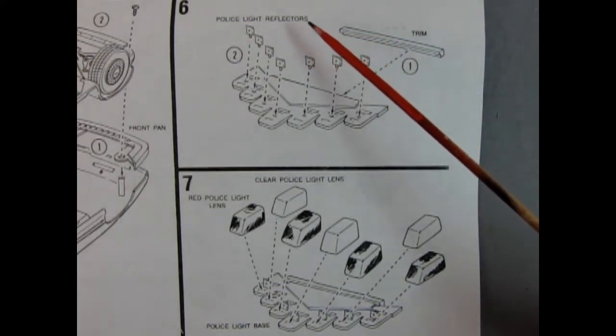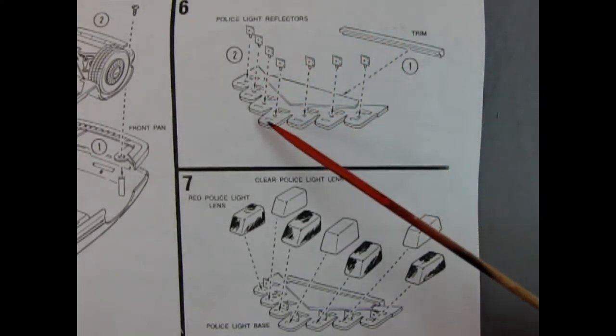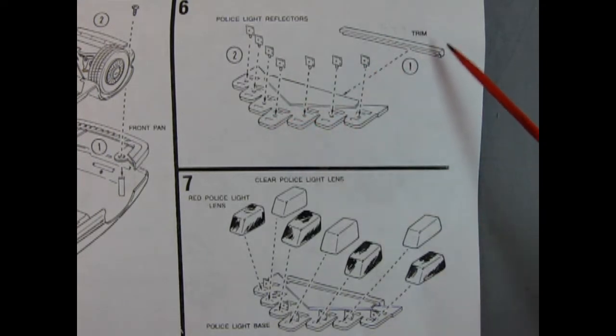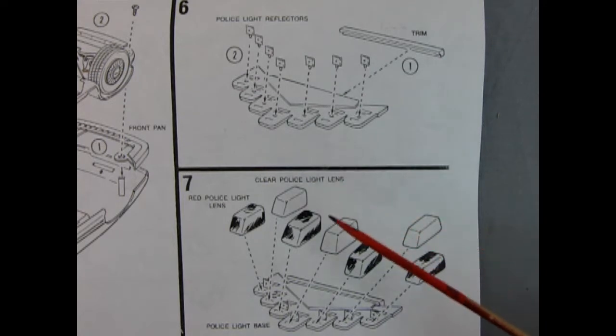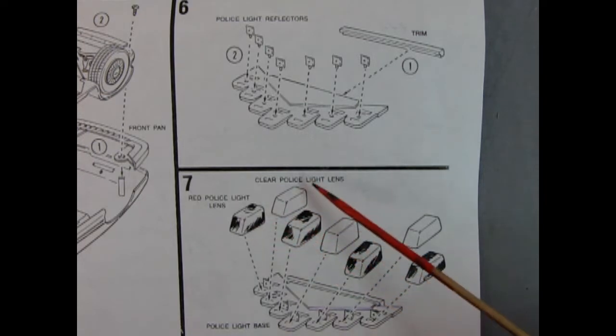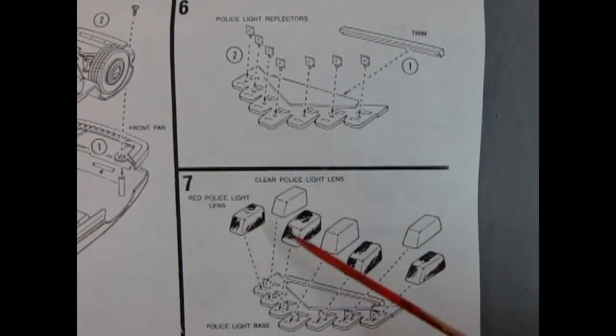So I'll do a two for one here. In panel six we get the police light reflectors gluing down onto this base and then there's a piece of trim which goes on the back here. And then after that in step seven we get all the little dome lights going on the top. So it has a police light lens here and here. I think they're different colors.